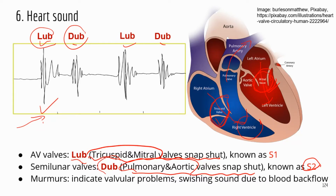Murmurs indicate some heart issues — usually a problem with heart valves. When you hear murmurs, they are usually caused by a squishing sound when blood is going back, which is not good because you don't want any backflow of blood. When blood flows backward, it often causes that squishing sound, and that's what causes murmurs.